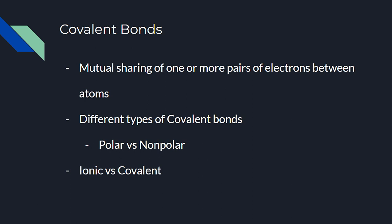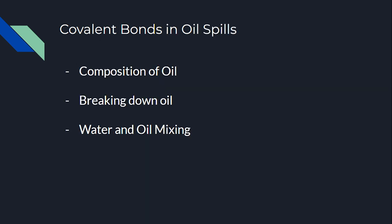Other than covalent bonds, there are also ionic bonds. Ionic versus covalent — ionic bonds are formed between a metal and a nonmetal, whereas covalent bonds are formed between two nonmetals. You can tell by looking on the periodic table whether a bond is ionic or covalent.